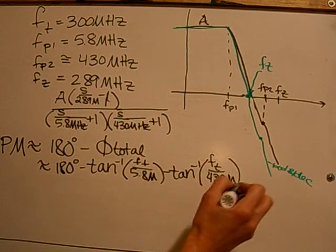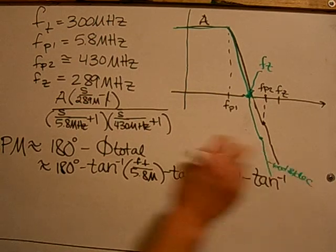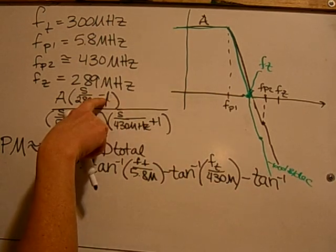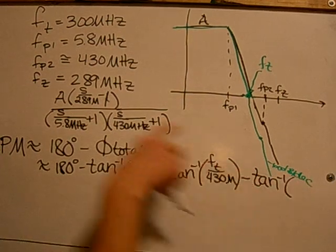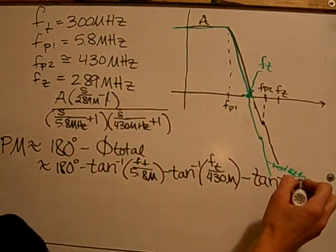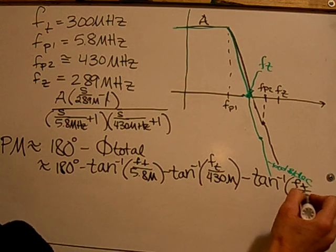And then the subtraction, because the zero is a positive zero instead of negative, it will still be a subtraction for the numerator. F of T over 289 MHz.